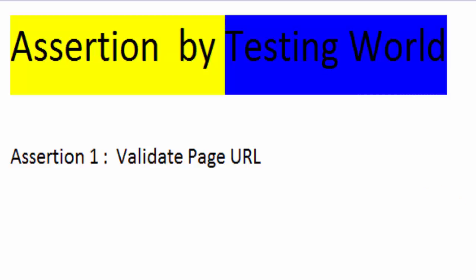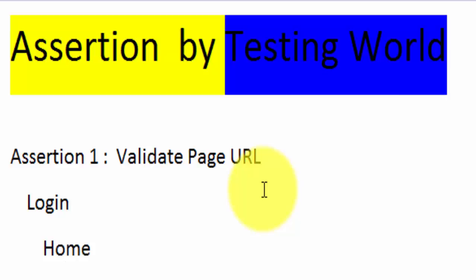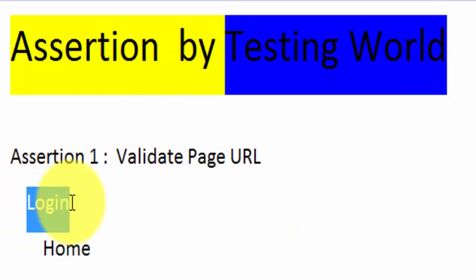Here I can take one example where we can use this assertion. A person is going to the login page and after login it should move to the home page. When I'm automating the login page, I entered username and password and clicked on the sign-in button. Now I want to validate whether I'm on the home page or the next page. In that kind of scenario, when you want to validate you are on the correct page or not, we can validate that page by using URL.